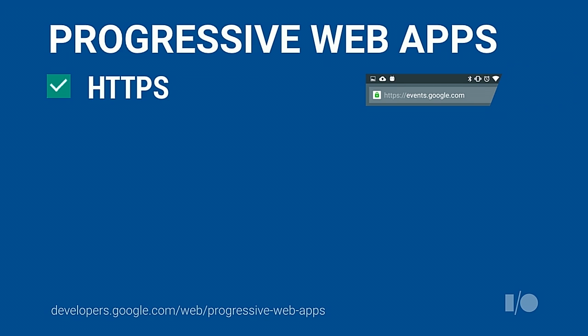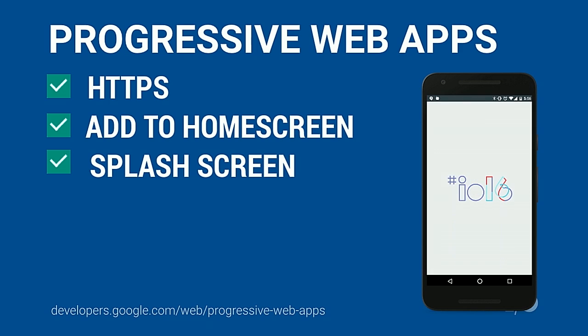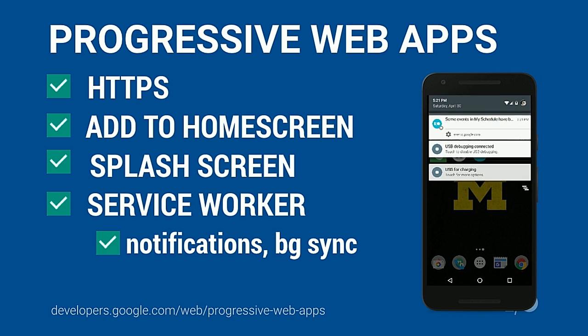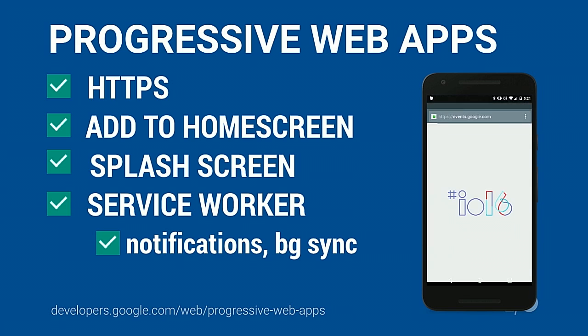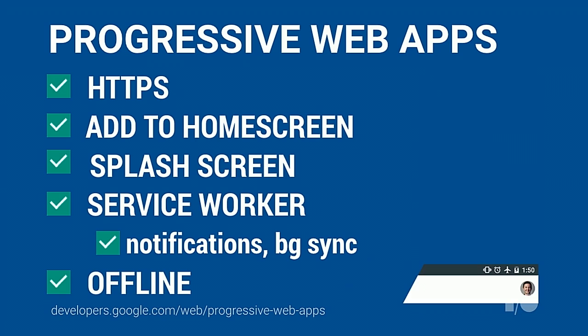Another goal was to build a progressive web app. All the usual suspects apply: SSL, we wanted people to launch us from their home screen with a splash screen for that immersive experience. Service Worker gave us notifications — for an event like Google I.O., it actually makes a lot of sense to send notifications to a user's device. Service Worker also gets you offline caching. We went the extra mile to make Firebase work offline and make our dynamic content work offline as well.